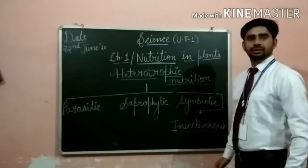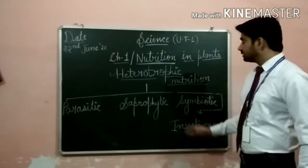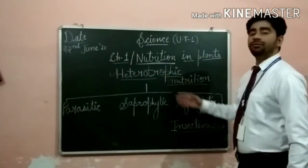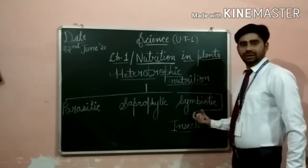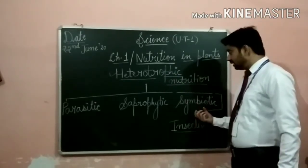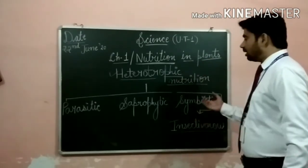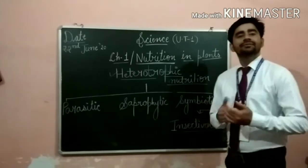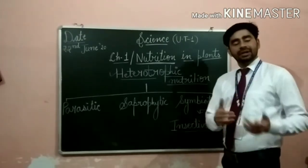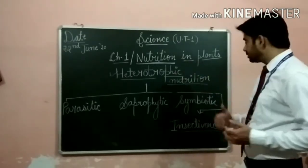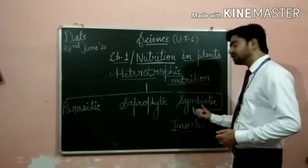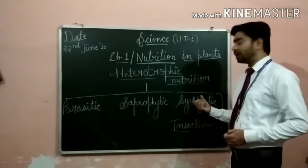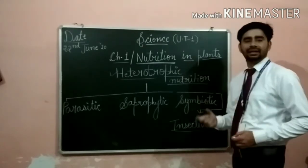The third mode of nutrition is symbiotic. In this category, organisms live together — different organisms live together and they are mutually benefited. For example, lichens, which is the best example because it is the association between algae and fungus.